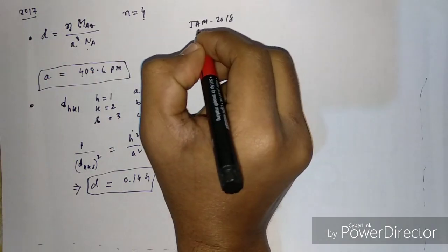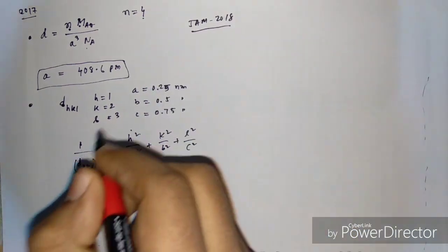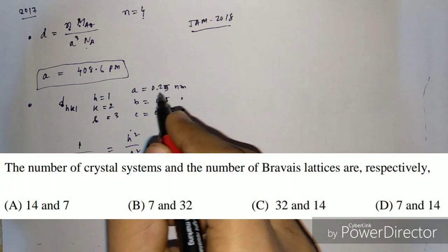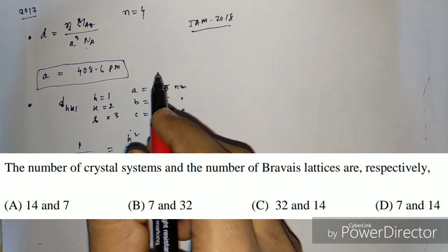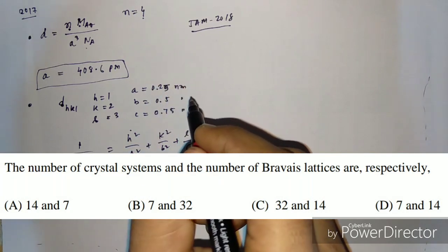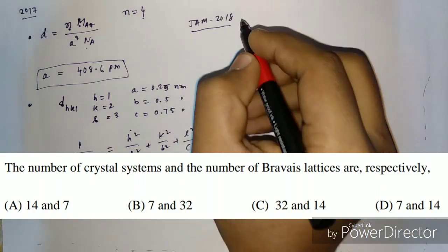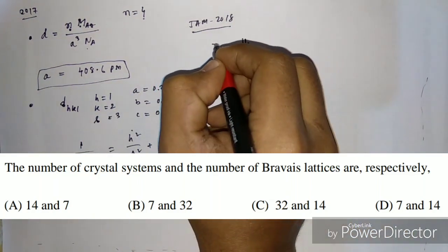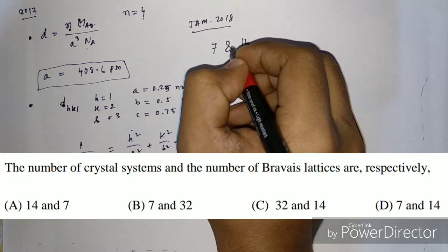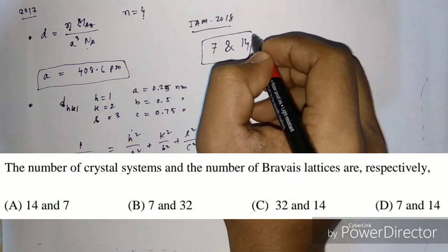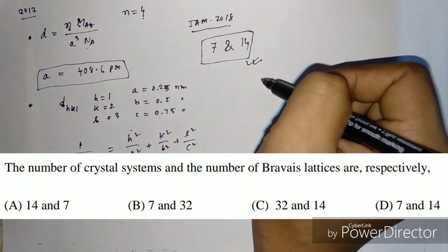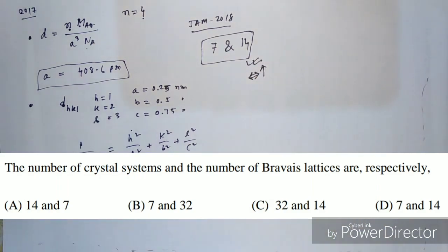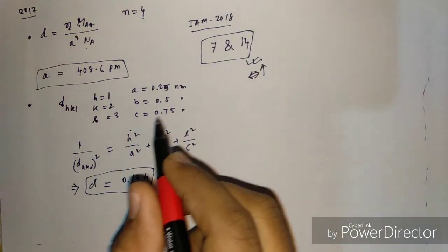JAM 2018 had only one question from this chapter, and it was very basic: the number of crystal systems and the number of Bravais lattices respectively. The answer is 7 crystal systems and 14 Bravais lattices — so 7 and 14 is the correct answer.